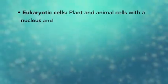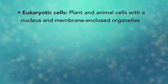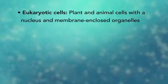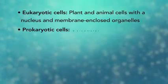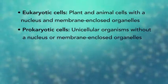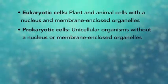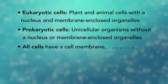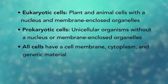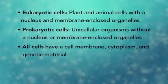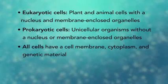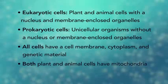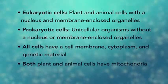In summary, eukaryotic cells are plant and animal cells with a nucleus and membrane-enclosed organelles, while prokaryotic cells are unicellular organisms without these things. All cells have a cell membrane, cytoplasm, and genetic material. And even though only plant cells have chloroplasts, both plant and animal cells have mitochondria.